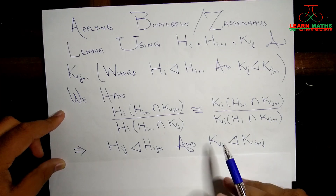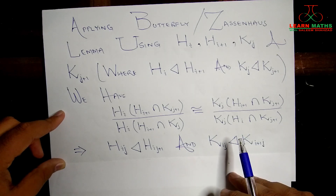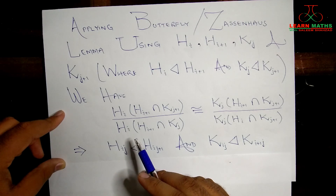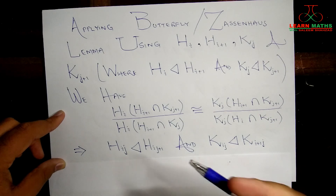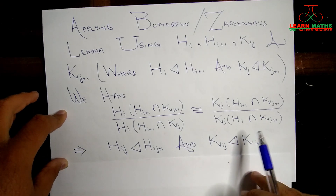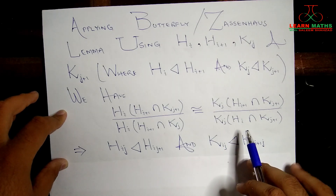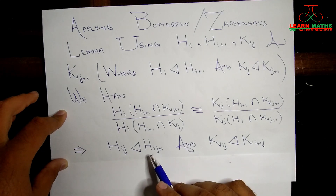It is now clear that the two classes of subgroups we constructed — one containing H_{ij} and the other containing K_{ij} — are also forming series of the group G. Furthermore, the class H_{ij} is actually a refinement of the original series consisting of subgroups H_i, and the class K_{ij} is a refinement of the series consisting of subgroups K_j.